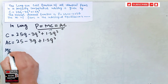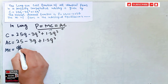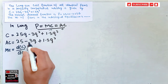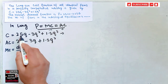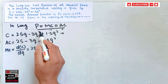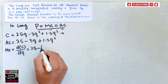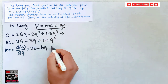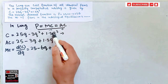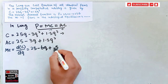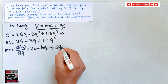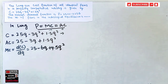Now, marginal cost is simply the derivative of the total cost function with respect to quantity. Our total cost is 25q − 3q² + 1.5q³. Taking the derivative: the derivative of 25q is 25, of −3q² is −6q, and of 1.5q³ is 4.5q². So our marginal cost is 25 − 6q + 4.5q².